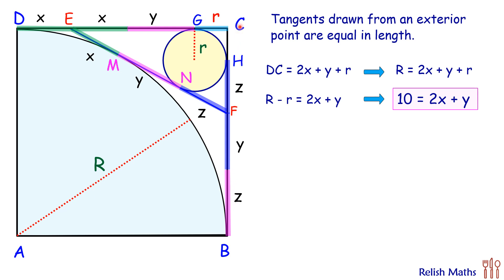Again CH is your small radius r. So full length CB is nothing but 2z plus y plus r. Putting BC as R we are getting R equals 2z plus y plus r. Taking r on the other side, R minus r equals 2z plus y, and putting value of R minus r which is given as 10, we are getting the second equation: 10 equals 2z plus y.